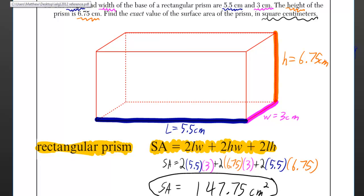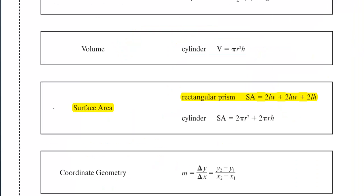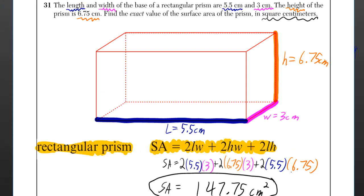They actually give you the formula for the surface area of a rectangular prism on the reference sheet. So I've copied that over, and then I just plugged into it. You get 147.75 centimeters squared.